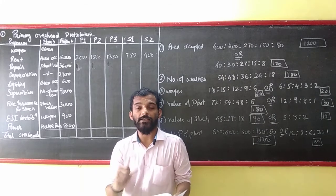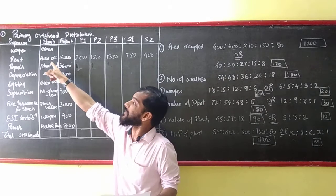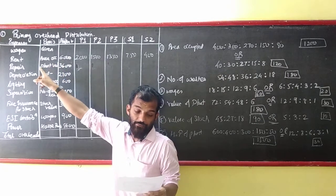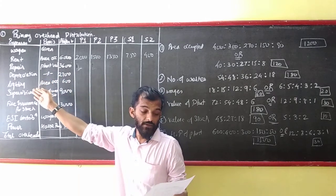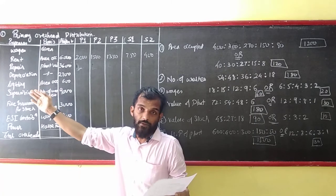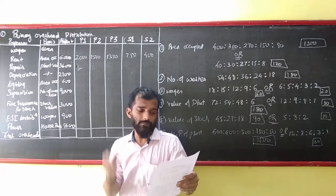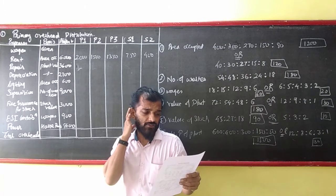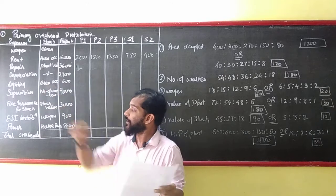Rent 6000, this is based on the area occupied. I have already written the base. Repairs based on the plant cost. Depreciation based on the plant cost. Lighting based on area. The number of light points is not given, so we will divide by the area. That's why I have written area occupied.